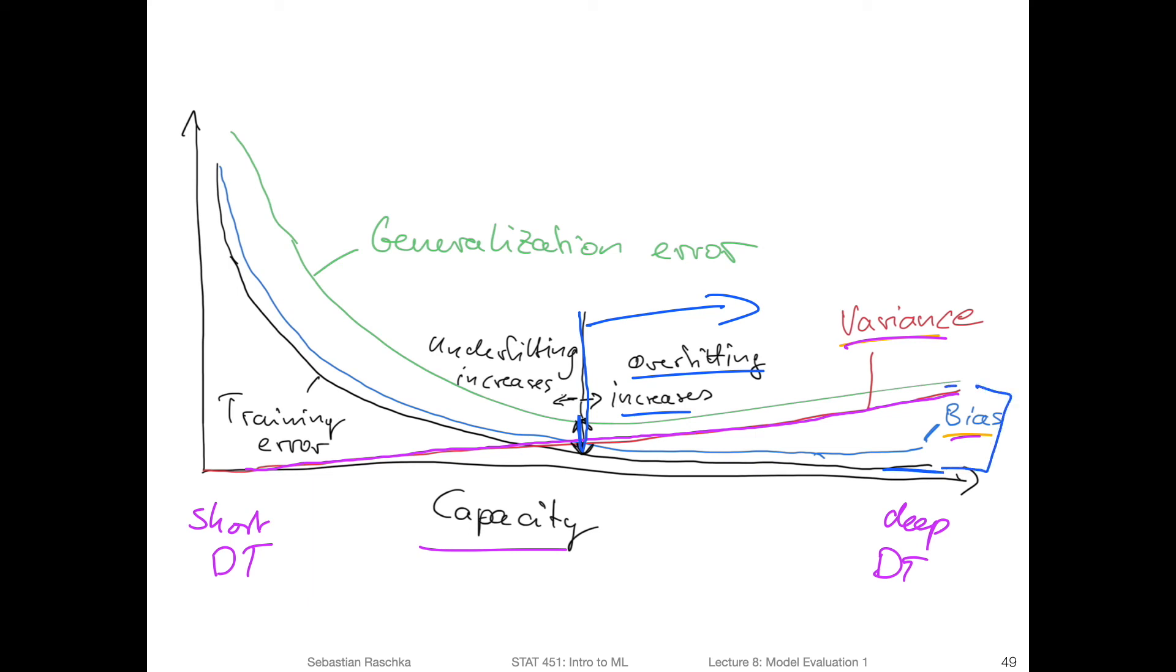So here, this gap is the degree of overfitting, and it increases as the variance increases. Usually, and vice versa, the higher the variance becomes, the lower the bias will become. So a more complex model will usually have a lower bias.